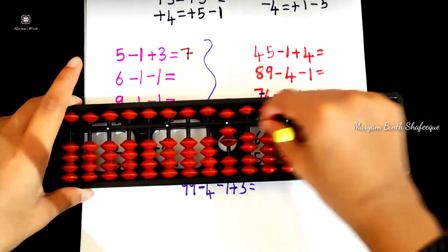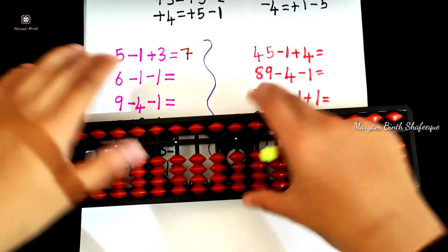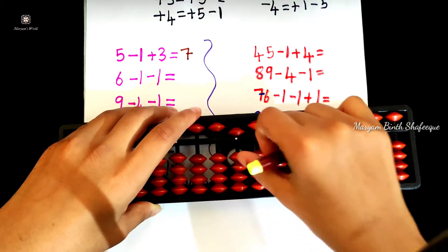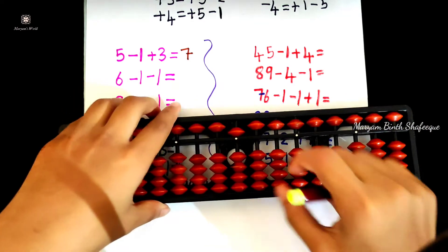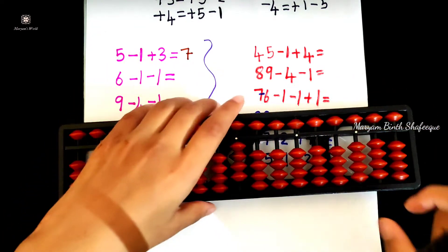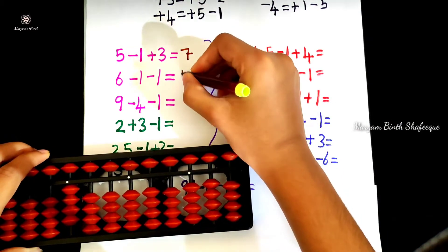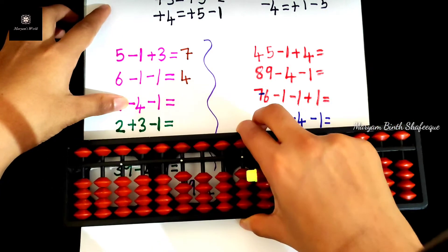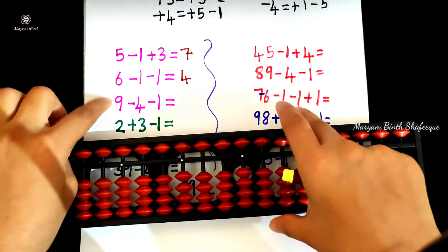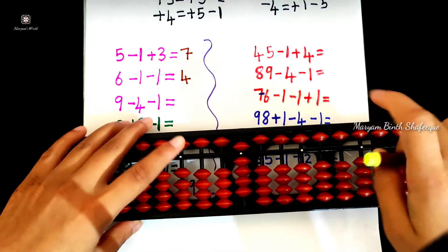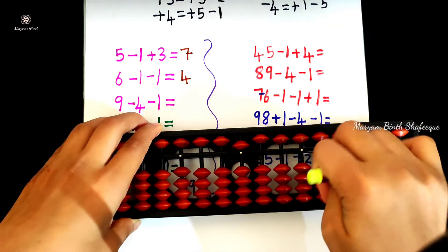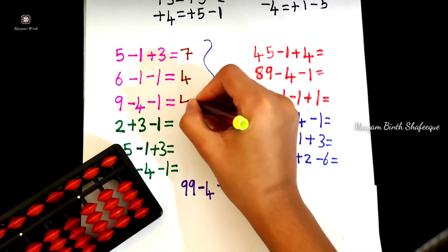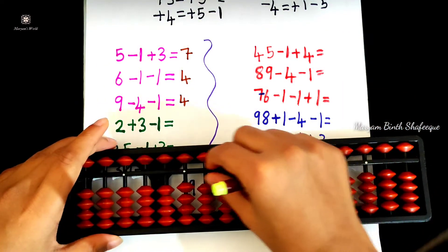Minus 1, minus 1. Now we have 4 using plus 4 minus 5. 4 is equal to 4. Now we have 9 minus 4 minus 1. Minus 1 is equal to plus 4 minus 5. Now we have 4.